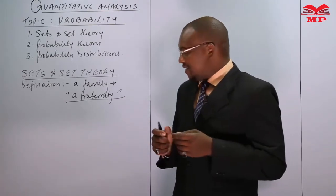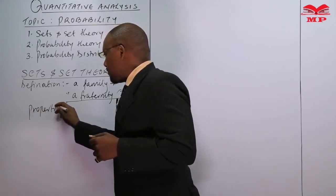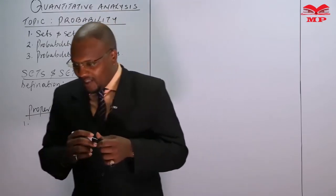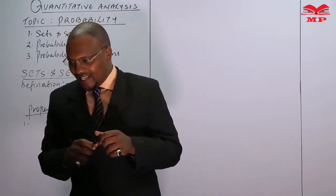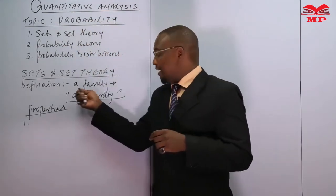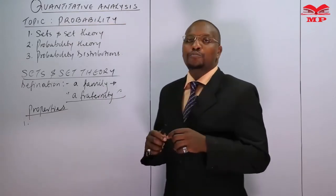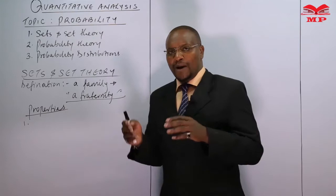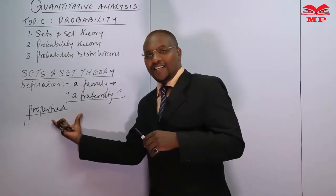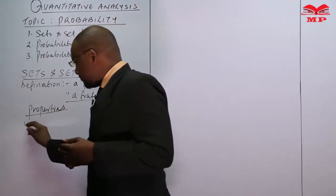Having known what a set is, let's look at the properties of a set. Number one: the elements of a set are well-defined. Like I said about a family, we must define who the members of this family are. Should you bring in another person who is not a member of that family, then it ceases to be that family. Therefore, the elements of a set must be well-defined.